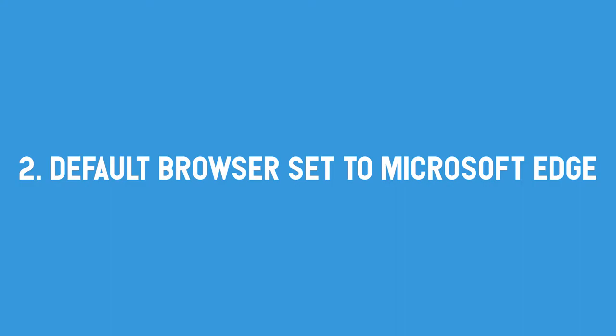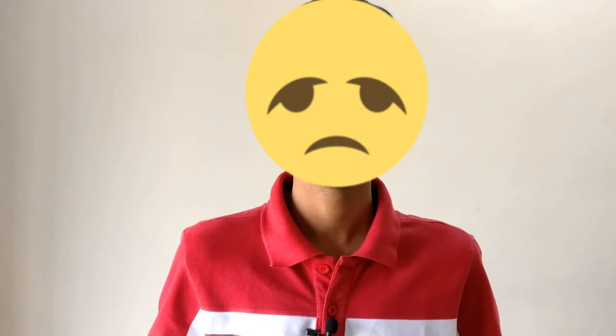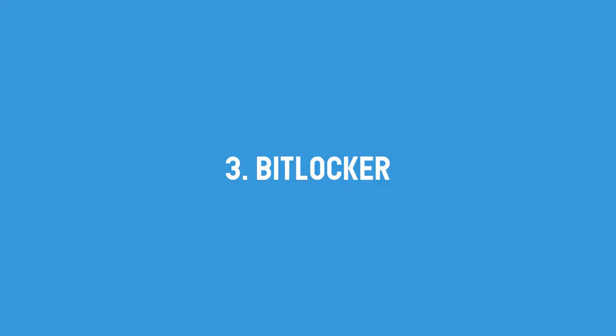Second: default browser. On Windows 10 S, the default browser is set to Microsoft Edge and you can only use Microsoft Edge — which is a bit limiting. On the other versions, you can configure other browsers like Chrome, Opera, Firefox, and more.